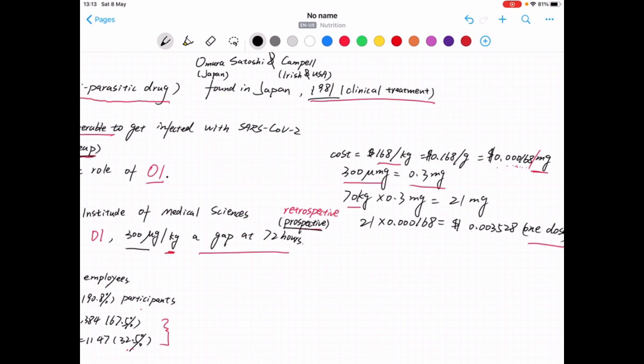And the standard male adult body weight is about 70 kilograms, which as a result for a male adult, demands 21 milligrams per dose.